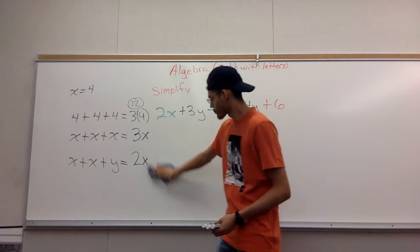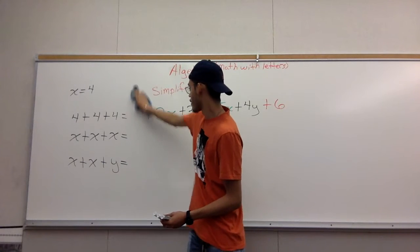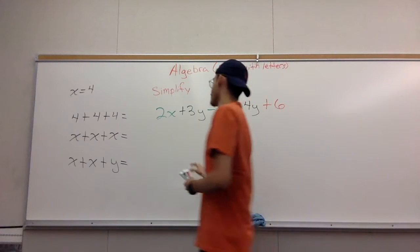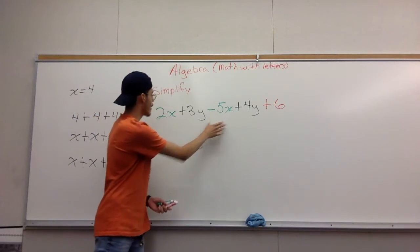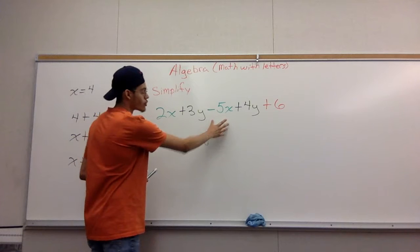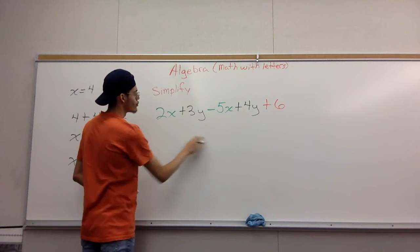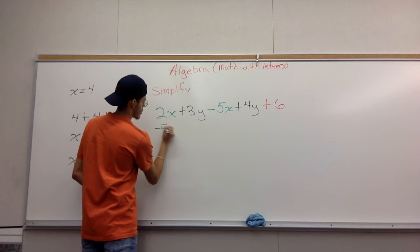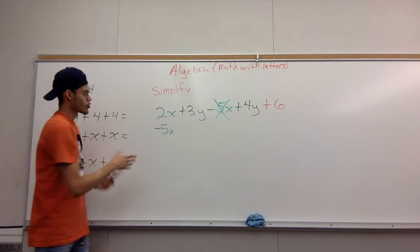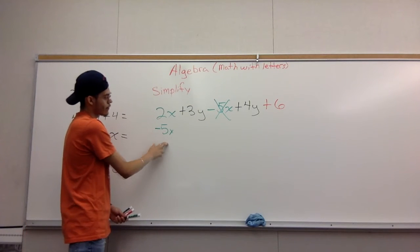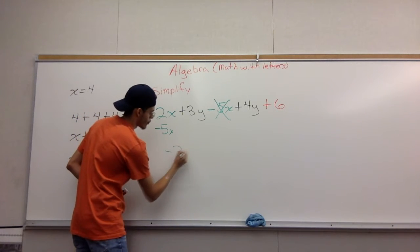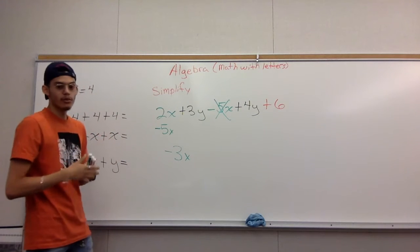So here, basically what you're trying to do is combine everything that you see that matches. So you have 2x and you have a negative 5x here in green. To make it easier, you can move the negative 5x over here under this, and you have a simple subtraction problem right here. So you have 2 minus 5, it would equal negative 3x.